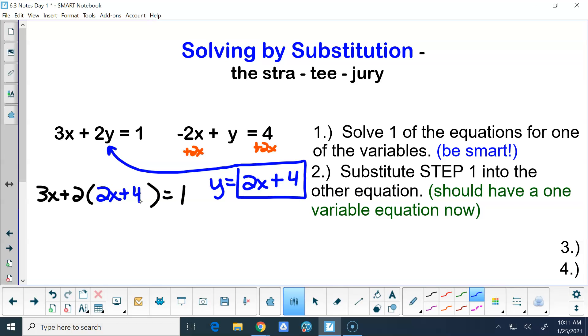And then what we do is now we're going to substitute what we did in step 1. So this blue equation, we're going to substitute that into the other equation. So I'm going to take this 2x plus 4, and I'm going to put it in the other equation for y. So that's going to give me 3x plus 2 times the quantity 2x plus 4, and that's going to equal 1. We should have a 1 variable equation now. And it's either going to be all x's or all y's, or all one letter.